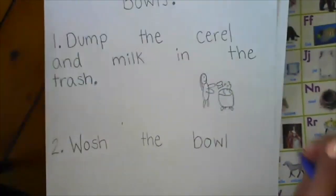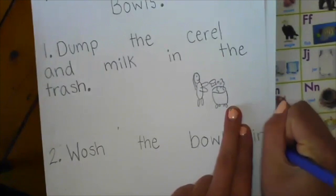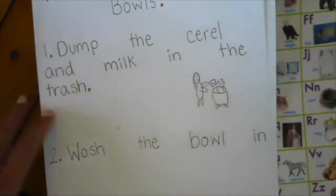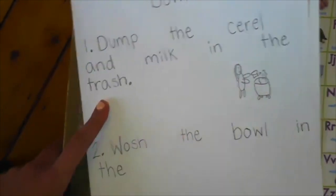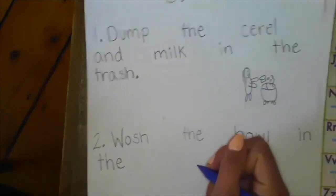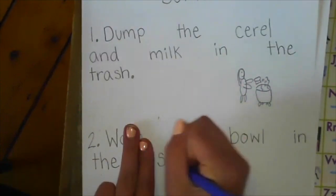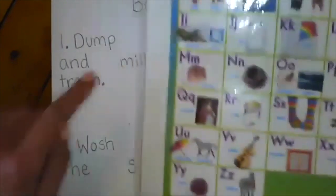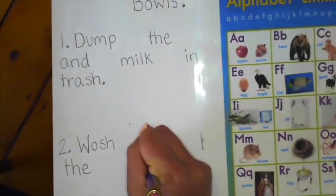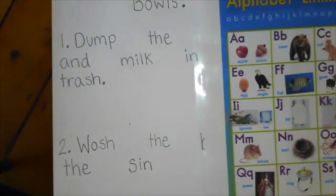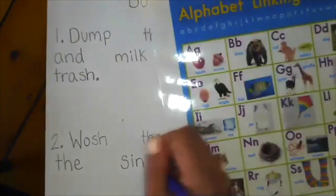Wash the bowl in. I-N spells in, sight word in the, oh, another sight word. T-H-E spells the. In the sink. Sink. S-I-N. Oh, I hear that sight word in. Remember how sometimes we can look for sight words that are hidden inside big words. We can hear sight words, little words we know, inside bigger words. Sink, K, sink.